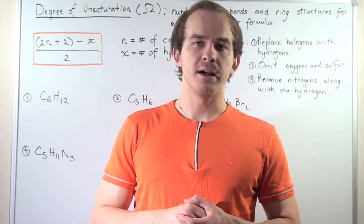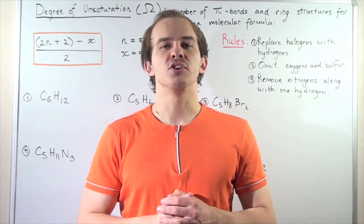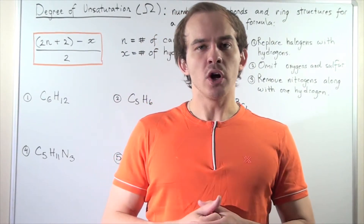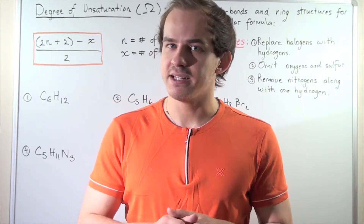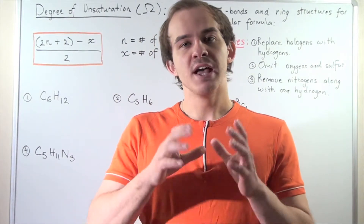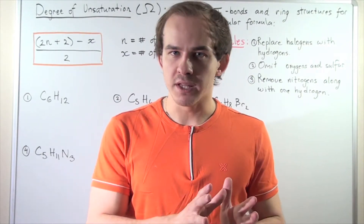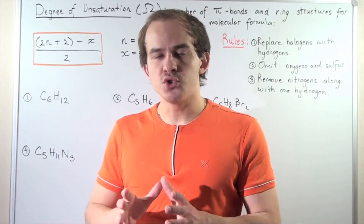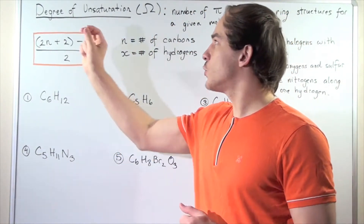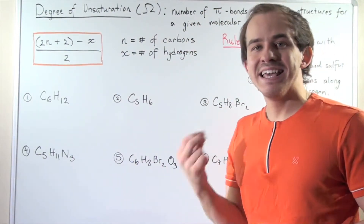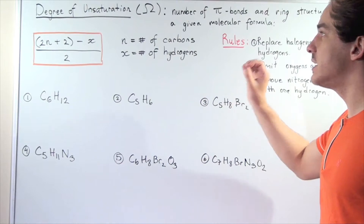Suppose you're given a certain compound and you know its molecular formula. If the compound is relatively simple, you can figure out the molecular structure using the molecular formula. But if the compound is complicated with lots of different atoms, it becomes very difficult. One tool we can use to figure out the molecular structure is known as degree of unsaturation. Degree of unsaturation, given by the Greek letter omega, gives us the total number of pi bonds and/or ring structures for that given molecular formula.